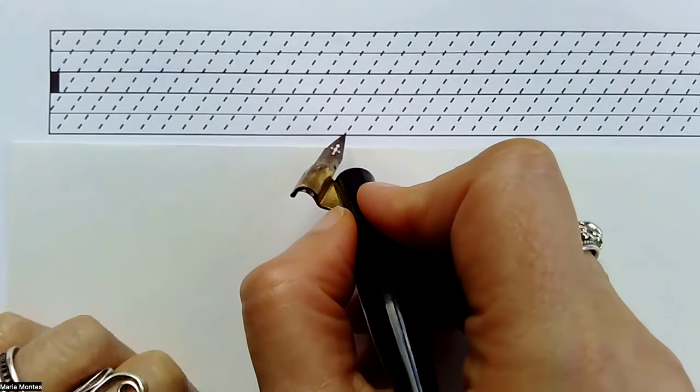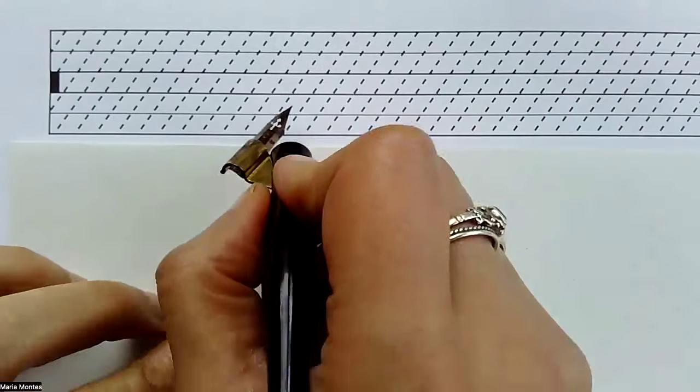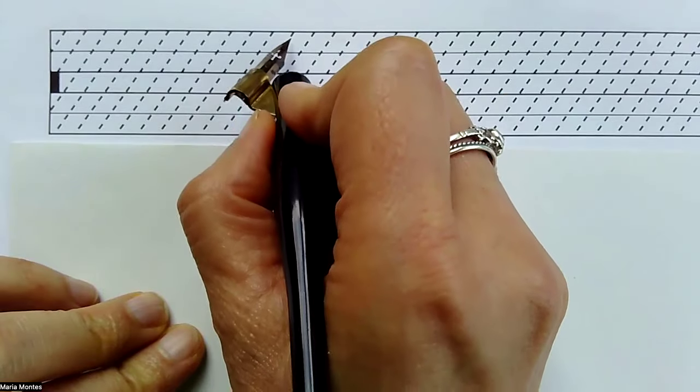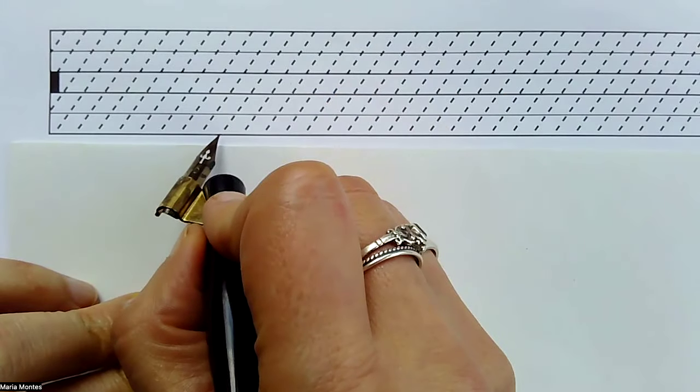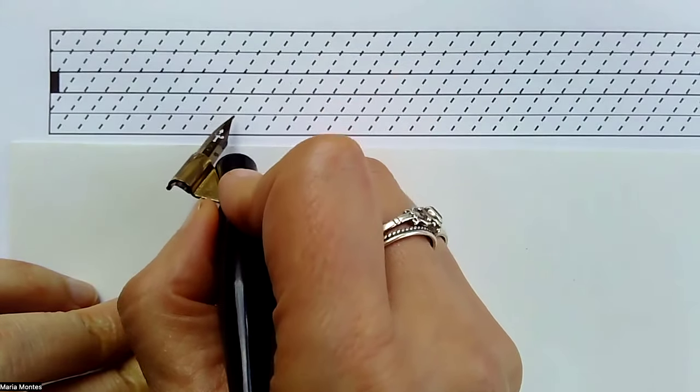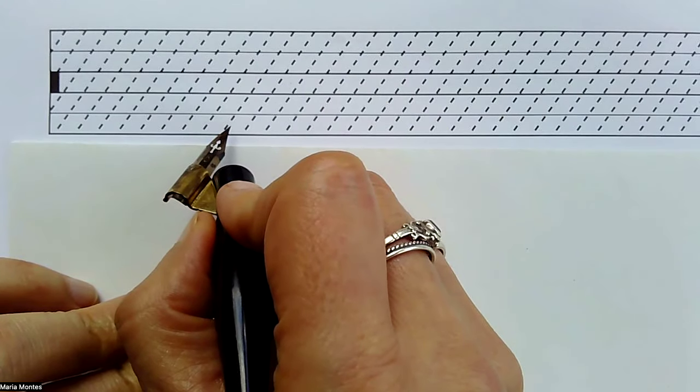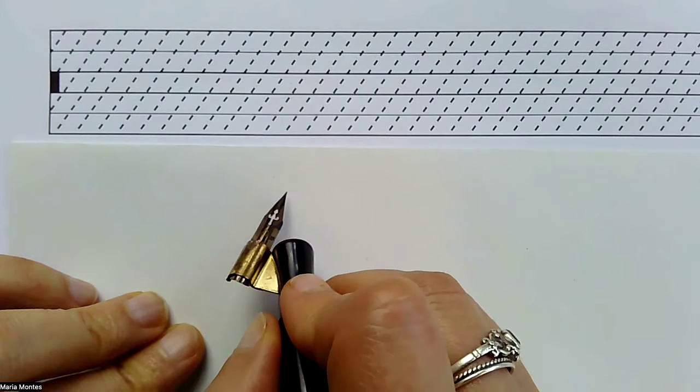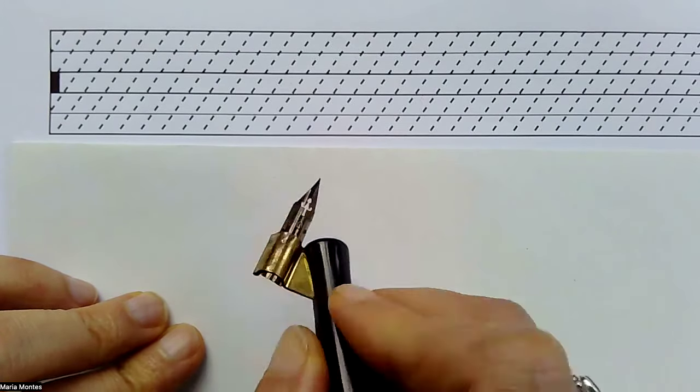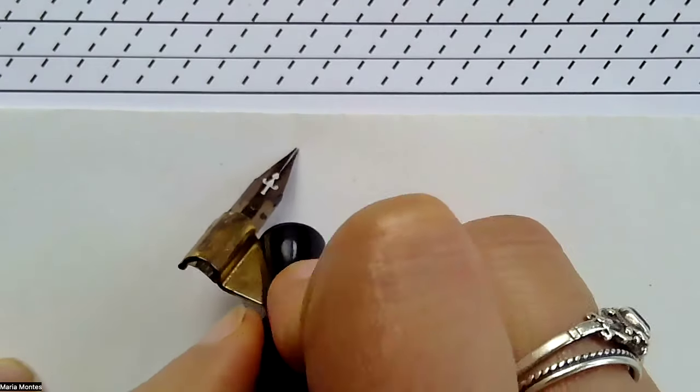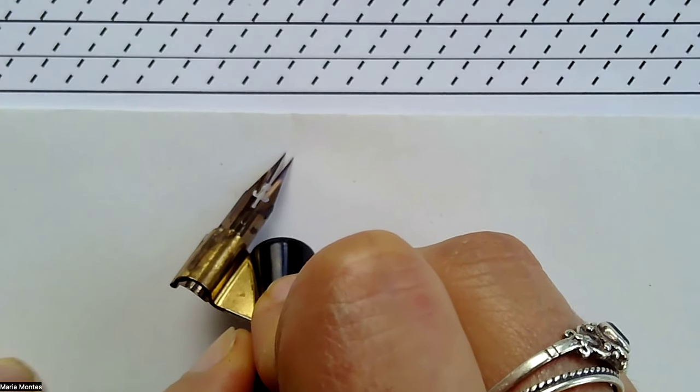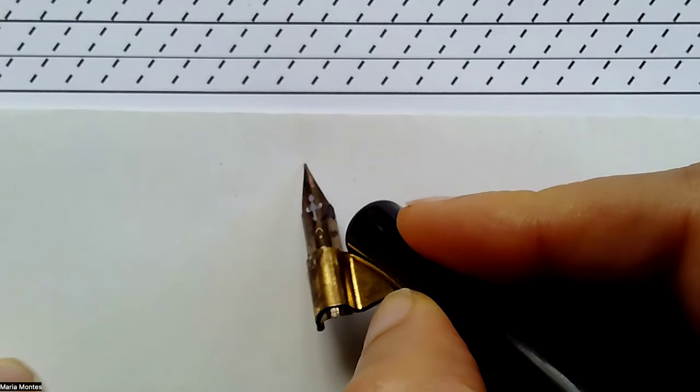And now, the part that is the crucial part is, the nib has to be an extension of the angle of the writing. It has to always be completely a line or an extension to the 55 degrees. Otherwise, we're going to have a lot of problems. Why? Because when you apply pressure, I apply a lot of pressure on the paper. You can see that both sides of the tine are touching the paper.